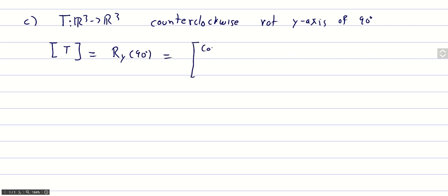This corresponds to the matrix cosine of 90 degrees, minus sine of 90 degrees, 0, 1, 0, and here's sine of 90 degrees, 0, cosine of 90 degrees. After evaluating the cosine and sine,